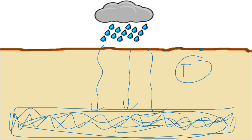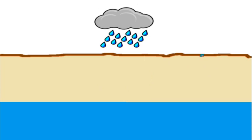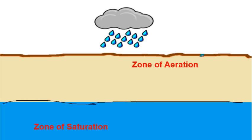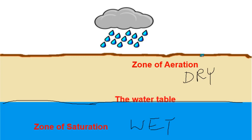The part up top is still dry because water can still work its way through there, while down below it's wet. These areas have names. The zone of aeration is the part at the top where water is not gathering — think 'aeration' or air, it's not full of water. The zone of saturation is the part of the ground that is full of water, all the little spaces filled up. The boundary between them — where dry ground transitions to totally wet ground — is called the water table. The water table is the point underground where the ground is now saturated or full of water.